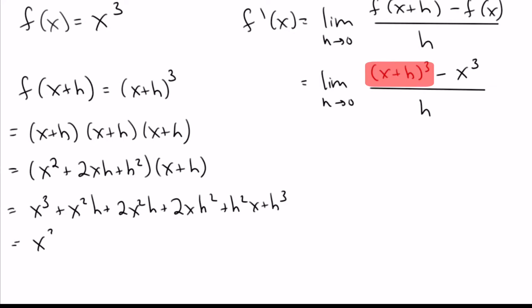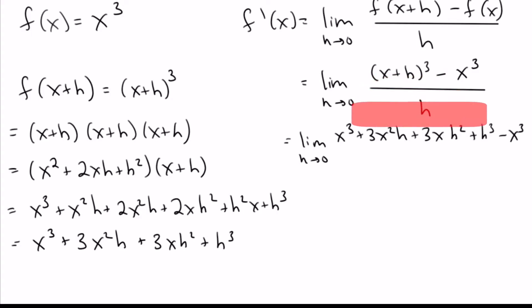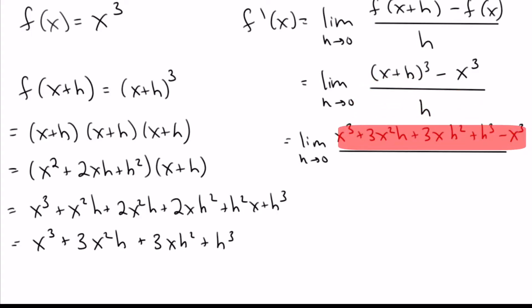We can see there are a few like terms here. The x cubed is on its own, but for the x squared h terms we've got three of them, and same for the xh squared terms — we've got three of them. So we can plug that back into what we had before: x cubed plus 3x squared h plus 3xh squared plus h cubed, minus the x cubed that was already there, all over h.